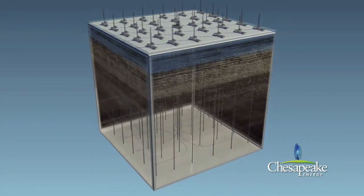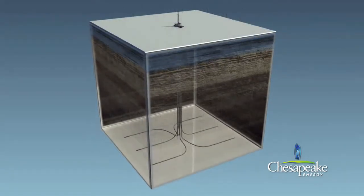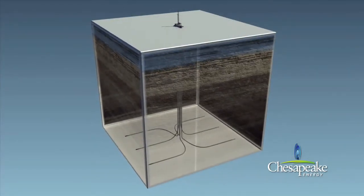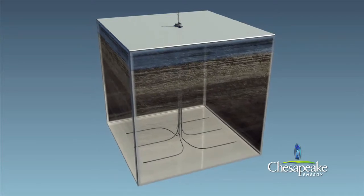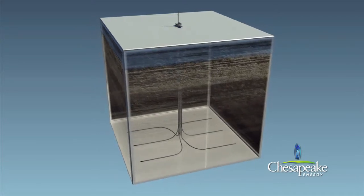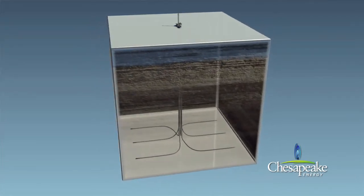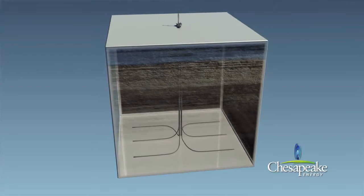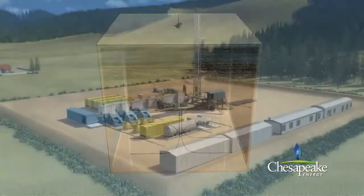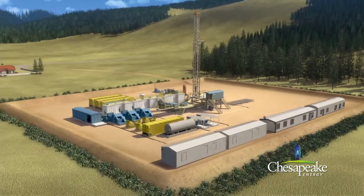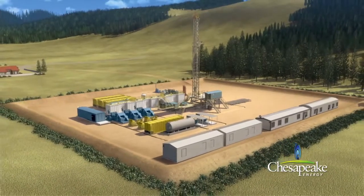However, one multi-well pad site with horizontal wells can effectively recover the same natural gas reserves from the 1,280-acre tract of land while reducing the overall surface disturbance by 90%.